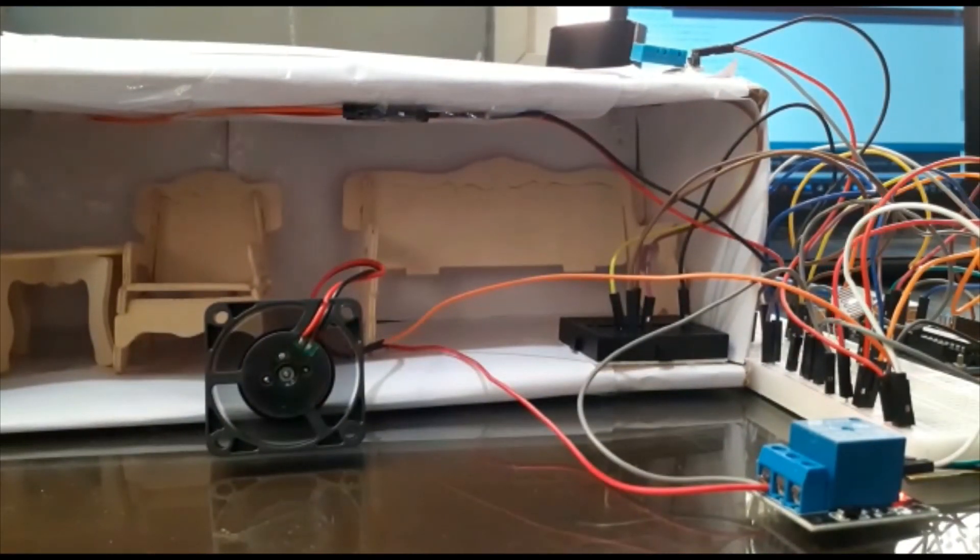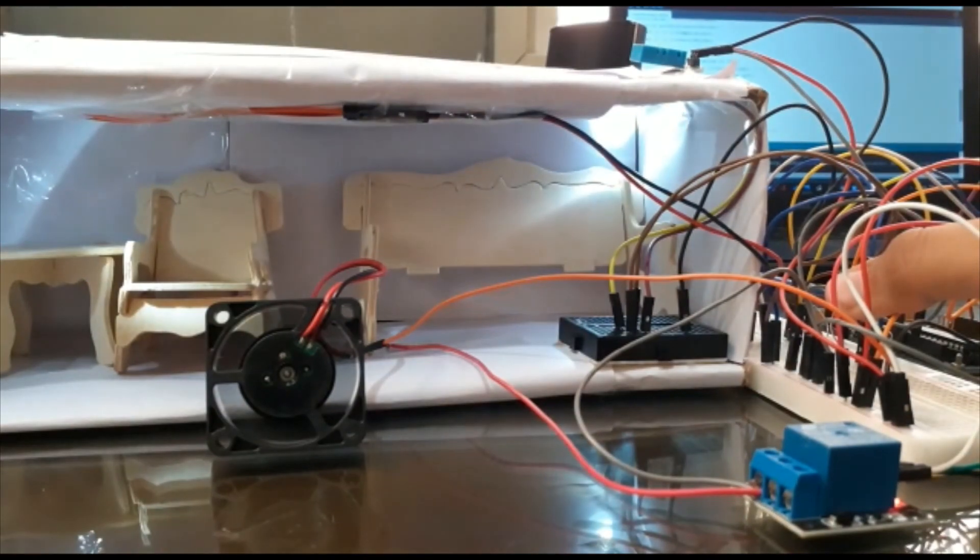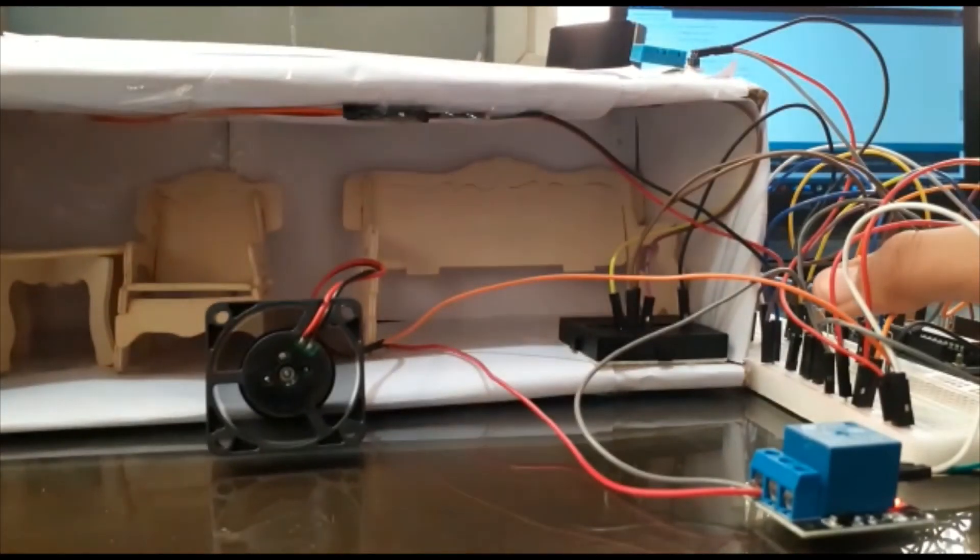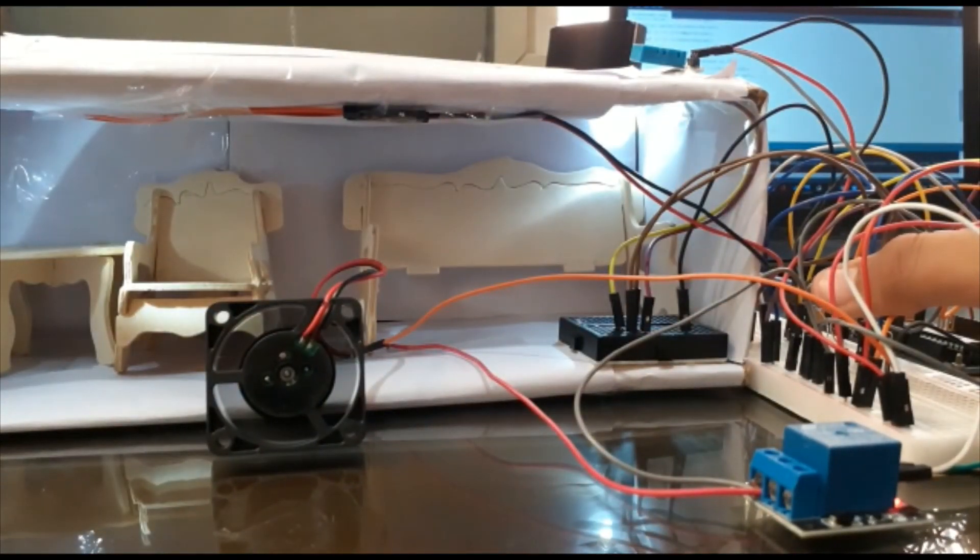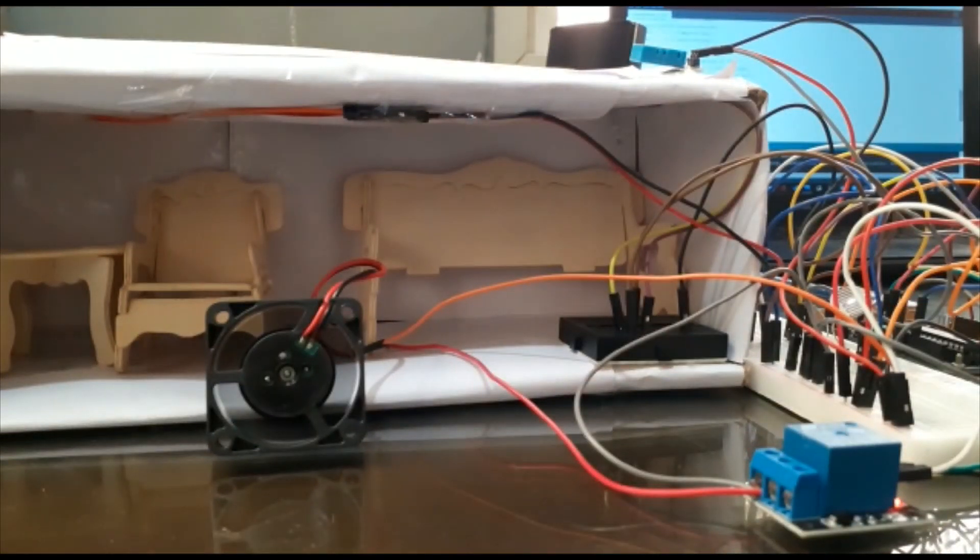This is the photoresistor. I'll cover the photoresistor with my finger. And as you can see, the photoresistor was unable to detect light, so the LEDs inside the house were on. After I remove my finger, the photoresistor is able to detect light, and so the LEDs are switched off. Let's have a look once again.